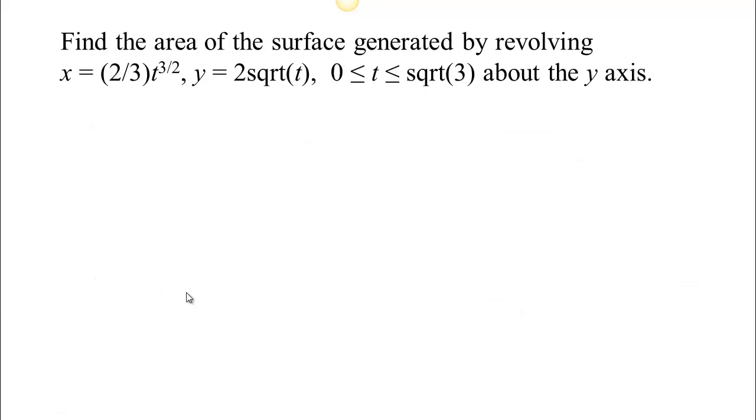So here's an example where we can find the area of a surface generated by revolving a particular curve about the y-axis. So remember our formula for the surface area, if we revolve about the y-axis, is going to be the integral from starting time to ending time. So 0 to square root of 3, 2 pi. If you're going around the y-axis, your radius is actually x. So we get times x, which is 2 thirds t to the 3 halves, times our length element, dt.